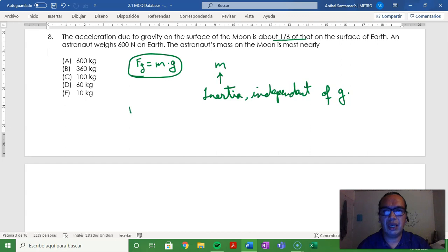Now, this astronaut has a mass equal to Fg divided by g on Earth, which is around 60 kilograms.